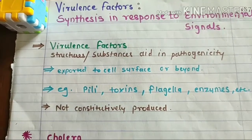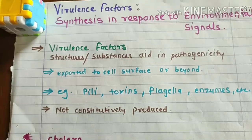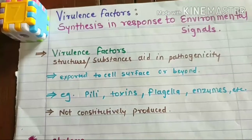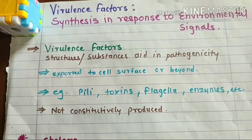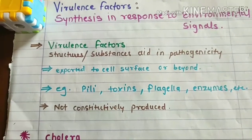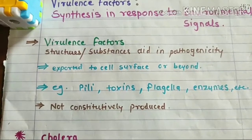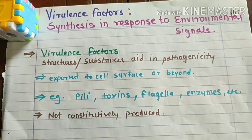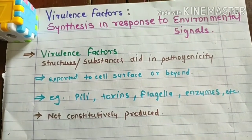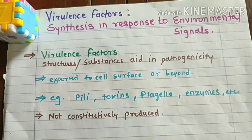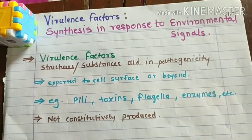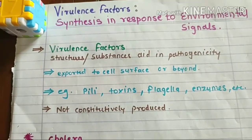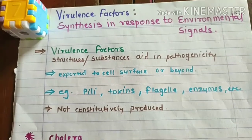First, we will see what is a virulence factor. A virulence factor is any structure or substance that aids in pathogenicity to help a pathogen establish an infection. Structures and substances means any structure such as pili or flagella, or substances such as toxins. These virulence factors, when they are produced, are exported to the cell surface or beyond.